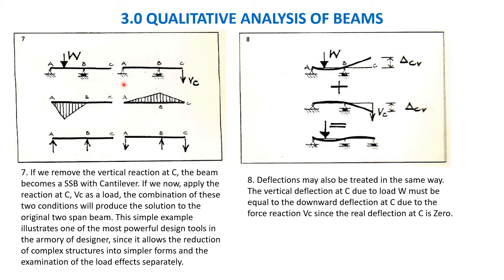It has to come down, so the reaction coming at A is down. If we remove the vertical reaction at C, the beam becomes simply supported with the cantilever. If we now apply the reaction at C, we apply the reaction at C.